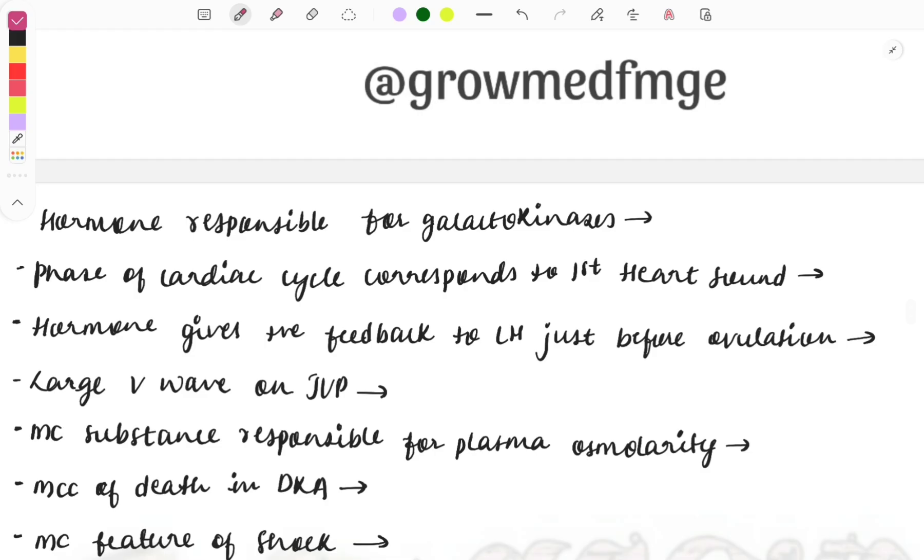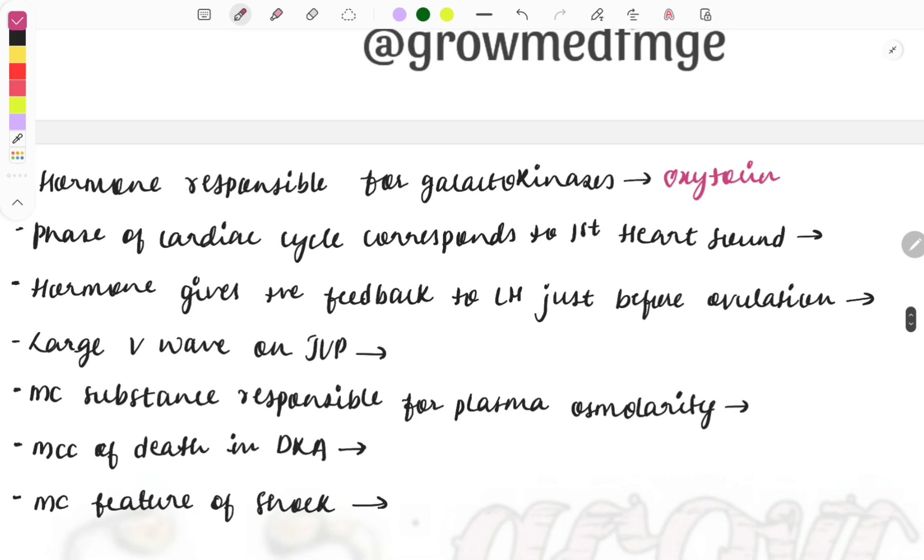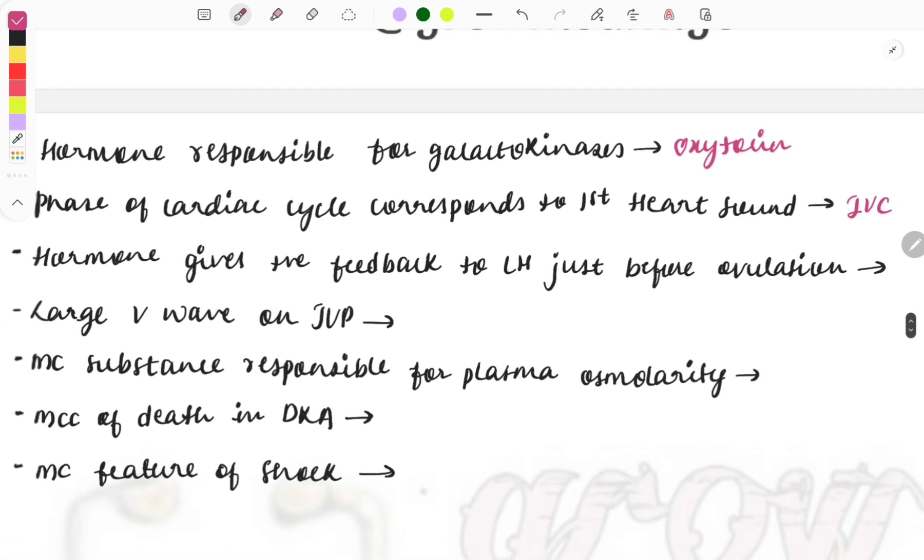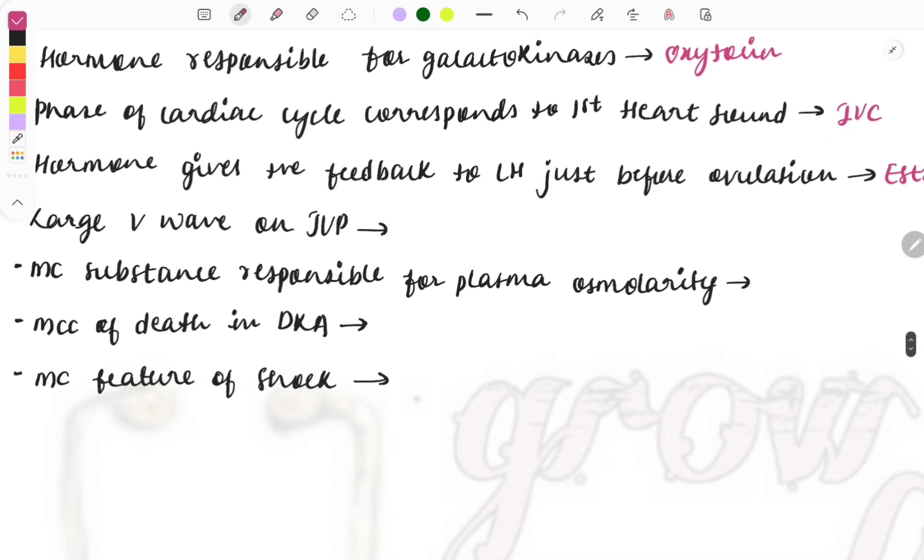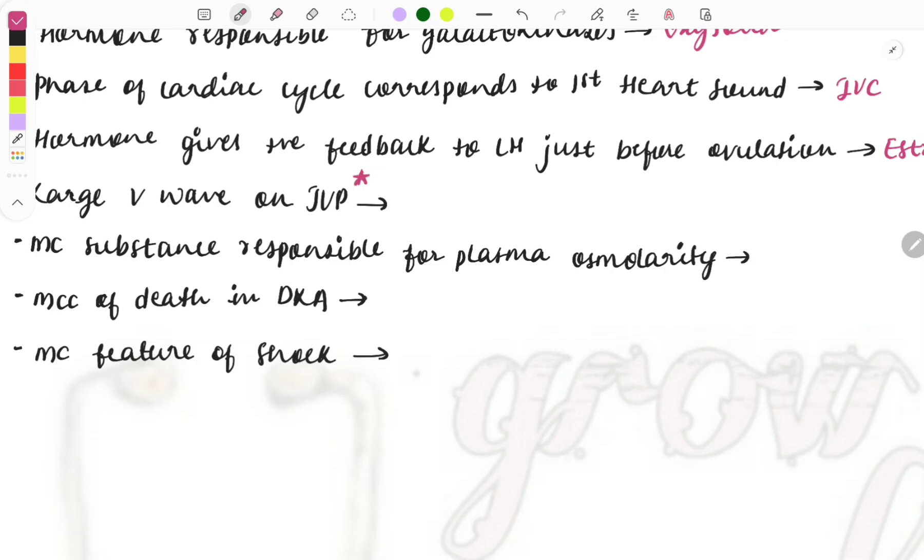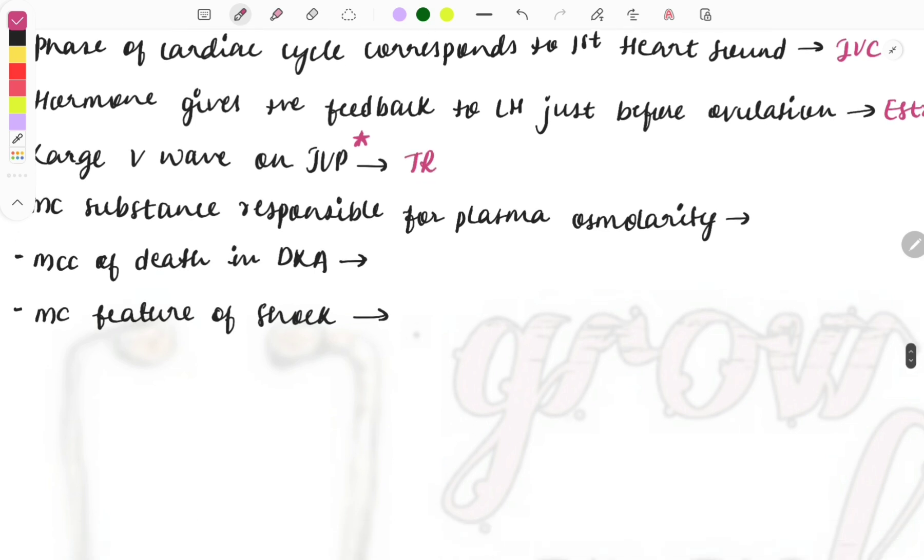Hormone responsible for the galactokinesis, it is the oxytocin. Then phase of the cardiac cycle which corresponds to the first heart sound, it is the isovolumetric contraction. Then hormone that gives positive feedback to LH just before the ovulation, it is the estrogen. Estrogen will be giving this positive feedback mechanism. Then large V wave is present on the JVP, so what does it signify? Jugular venous pressure, again an important topic, the waves in the jugular venous pressure, and the A wave, the V wave, what does it stand for and if there is any abnormality what does it present? Like for example, the large V wave, this one is seen in case of tricuspid regurgitation. And like another two examples will be giving: absent A wave, atrial fibrillation. Then steep X seen in the cardiac tamponade. So must, must, must the topic jugular venous pressure, note it down.